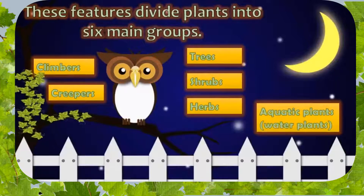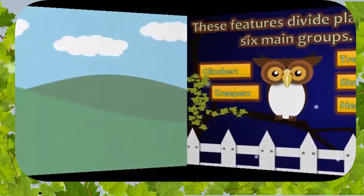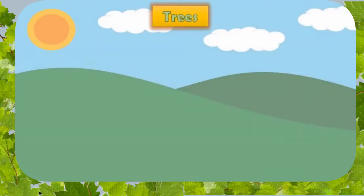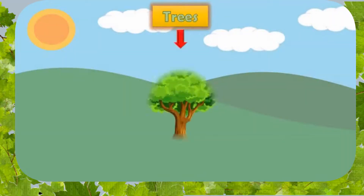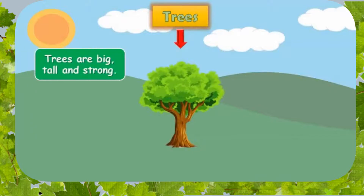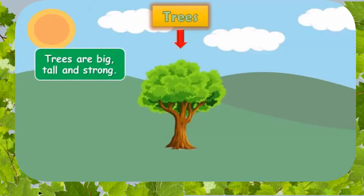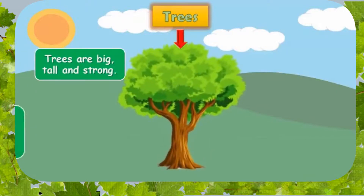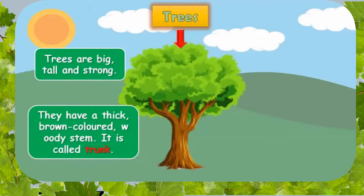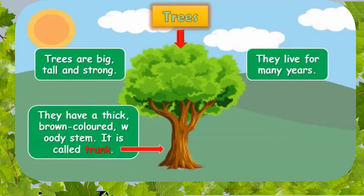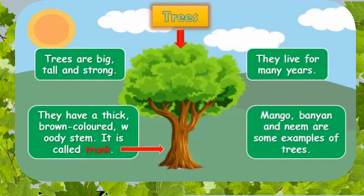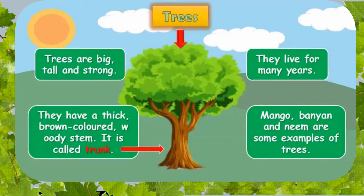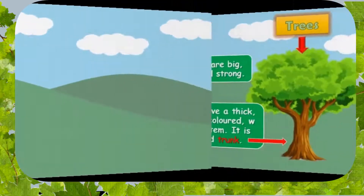Let's look at them one after the other. Trees are tall, big plants. They are very strong and they have a thick brown colored stem called a trunk. They live for many, many years. An example of a tree is the mango tree.